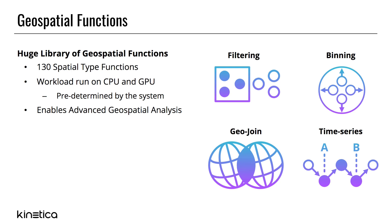Kinetica offers a robust library of over 130 geospatial functions to perform on-demand and performant batch analysis. You can filter huge datasets on the fly, bin point geometry into polygon boundaries using aggregations, and enrich point data with attributes from polygons using the geojoin operation.